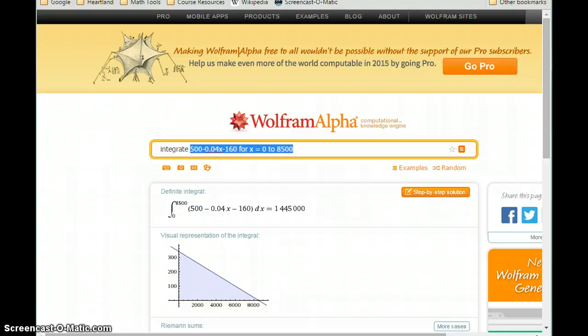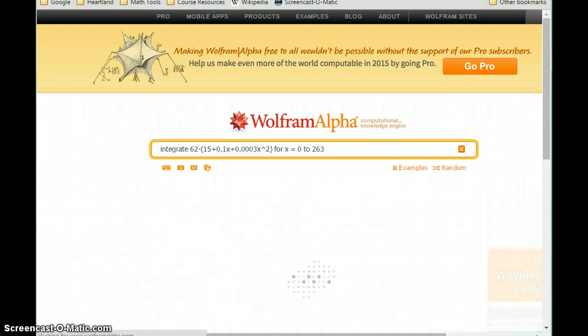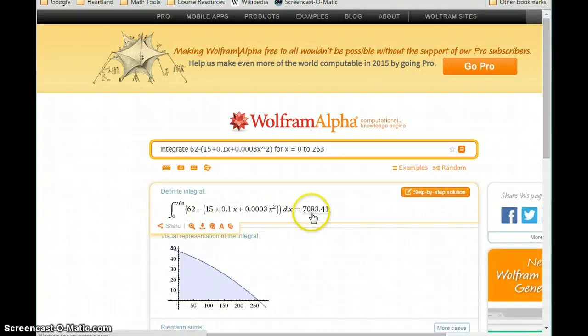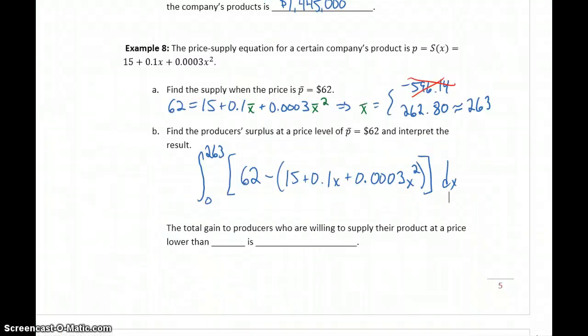So in this case, we would be integrating 62 minus the quantity 15 plus 0.1x plus 0.0003x squared for x equals 0 to 263, that value for x bar. And in this case, we get a result of about $7,083. So the total gain to producers who are willing to supply their product at a price lower than $62, which is that given current price, the total gain is $7,083.